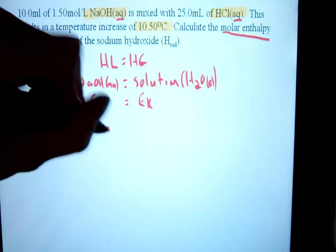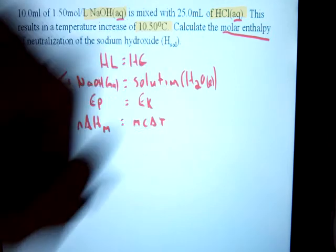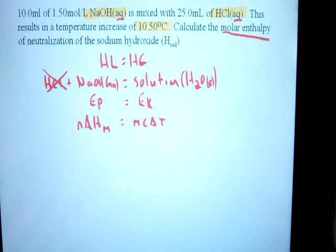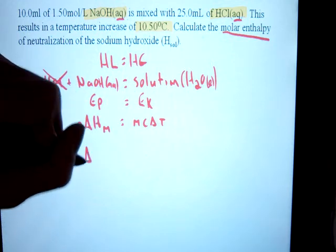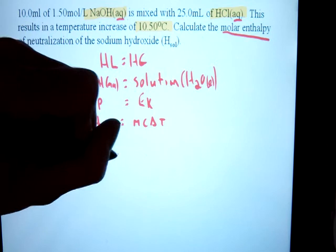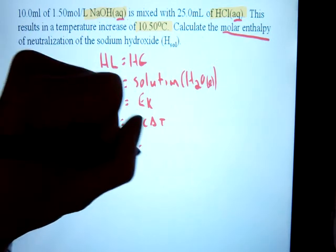Now we can throw in our formulas. Again, if you are utilizing completely unit analysis, fantastic. If you're using formulas like many of you will, watch your units. You still have to work with them. So rearrange, isolate your delta HM. Let me MC delta T over N.